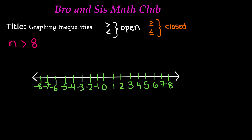So our first example was n is greater than 8. We have a greater than symbol, so it is an open circle. It says greater than 8, so on the number 8 — here we have a number line with negatives off to the left, positives off to the right, and 0 in the middle — 8 is right over here. So we're going to draw an open circle on 8.